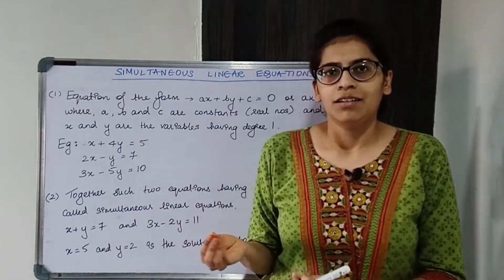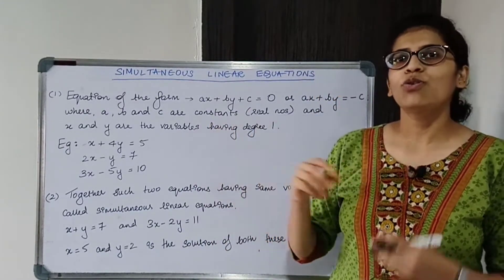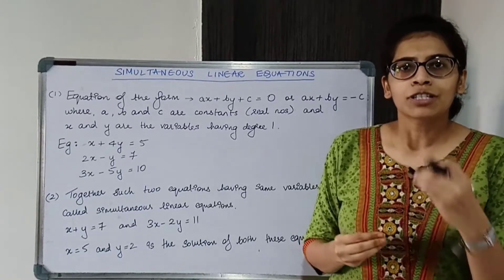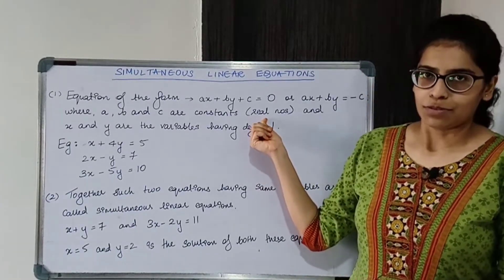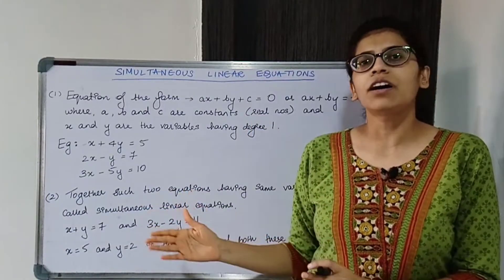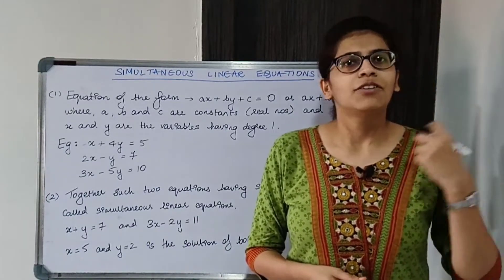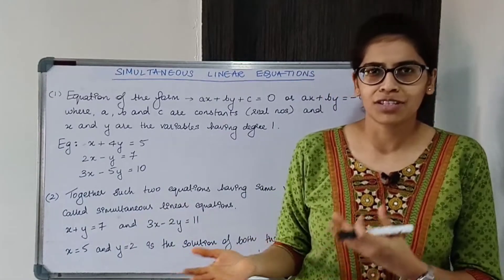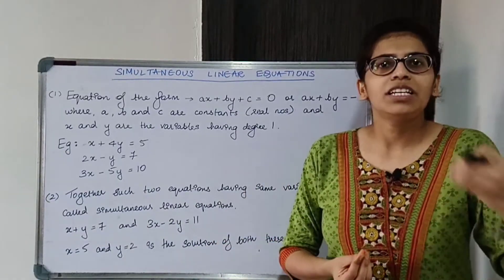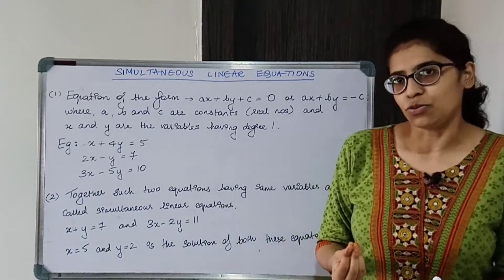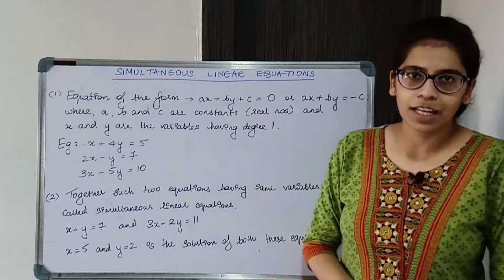A, B, and C are constants — they have some constant value, which are real numbers. All the numbers you have learned so far — natural numbers, whole numbers, integers, rational numbers, irrational numbers, decimals, fractions — A, B, and C can have any of these values, any real value.